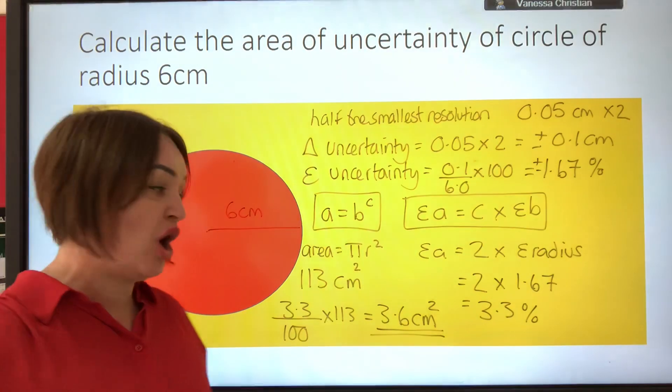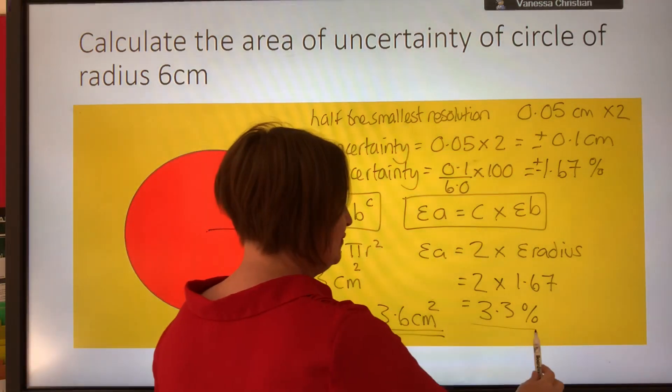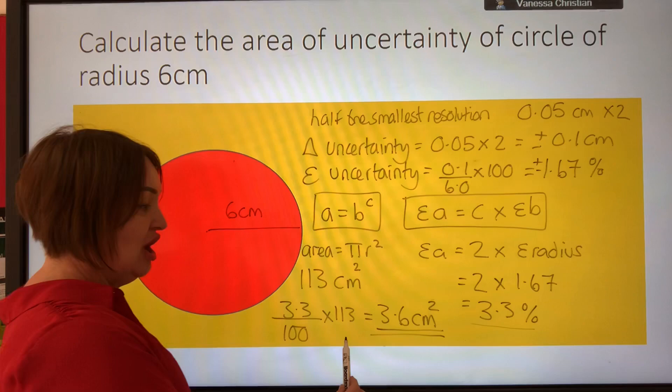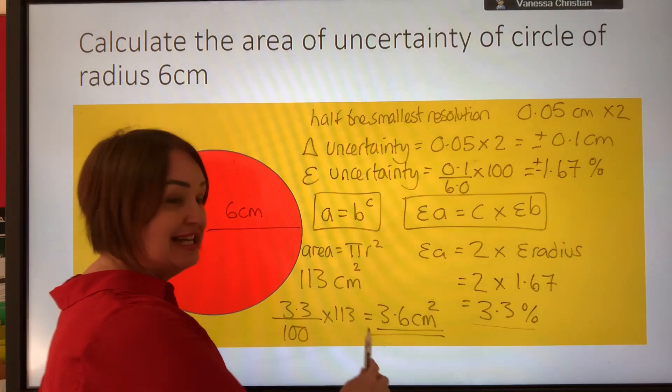So just to recap, our percentage uncertainty is this one, and our area of uncertainty is this one.